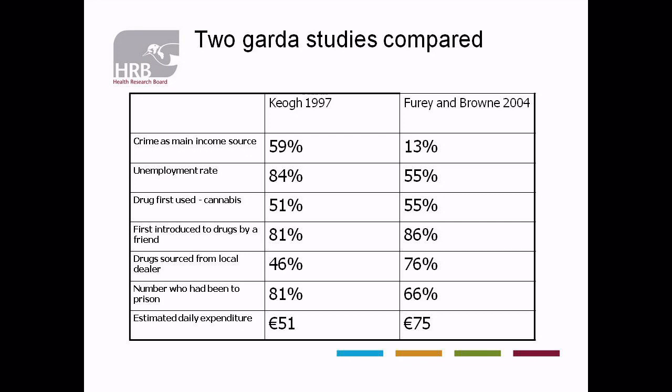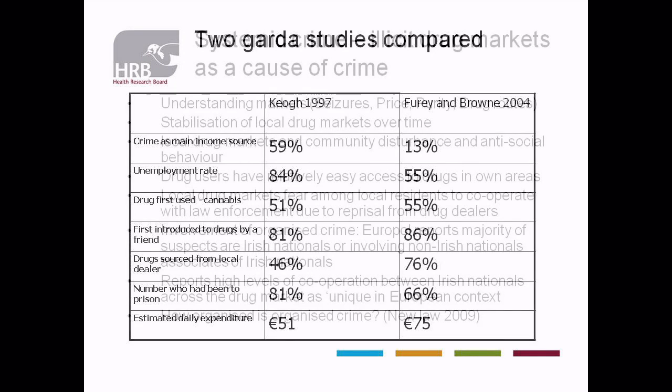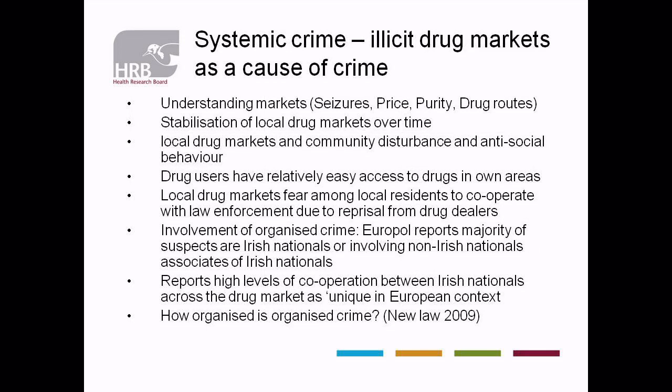Systemic crime refers to crimes committed as a consequence of the fact that drugs are illegal and there is an illicit market. How we understand this, we look at things like drug seizures, drug prices, drug purities, and drug routes. If the purity of drugs is lower, will the price be lower? In studies I've conducted here, there doesn't seem to be a huge connection between price and purity, certainly not at a street level. You would assume that lower availability would mean prices increase following basic supply and demand — and yet what we have seen is that drug prices have decreased in Ireland over the last number of years while availability hasn't really been affected.